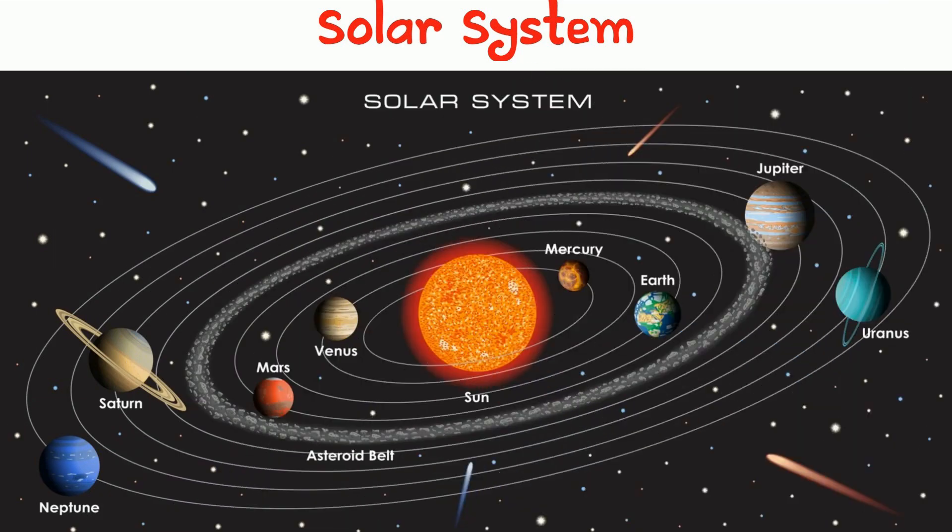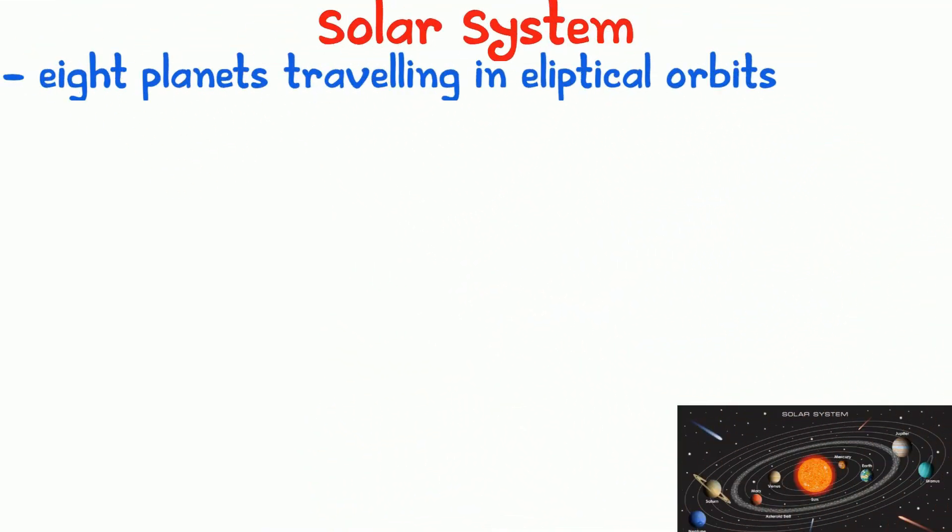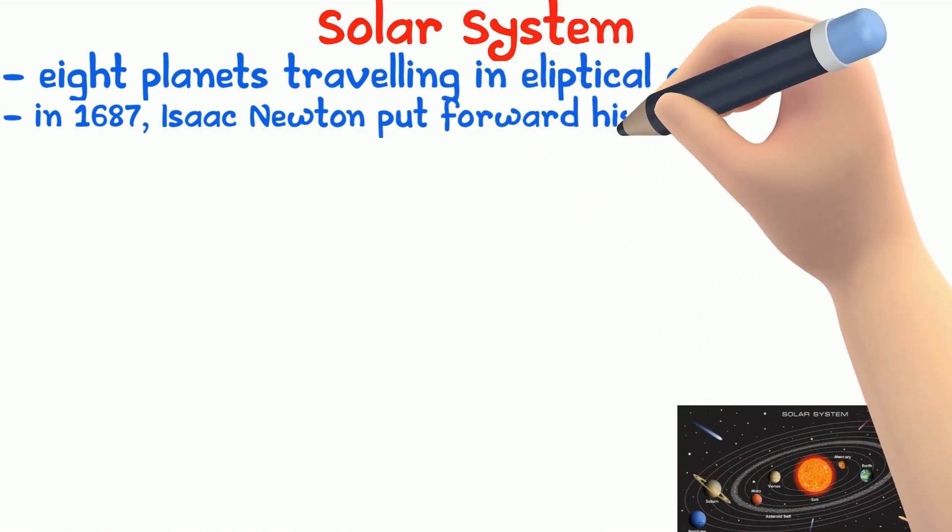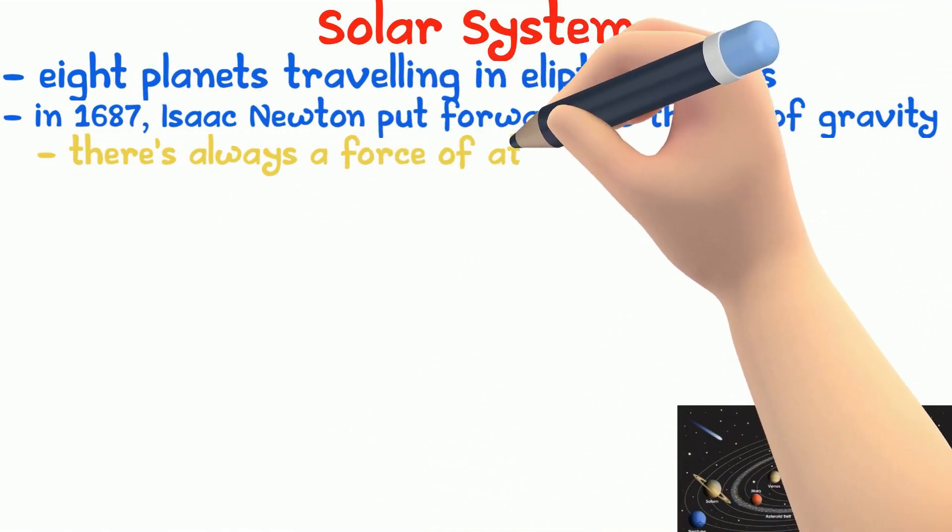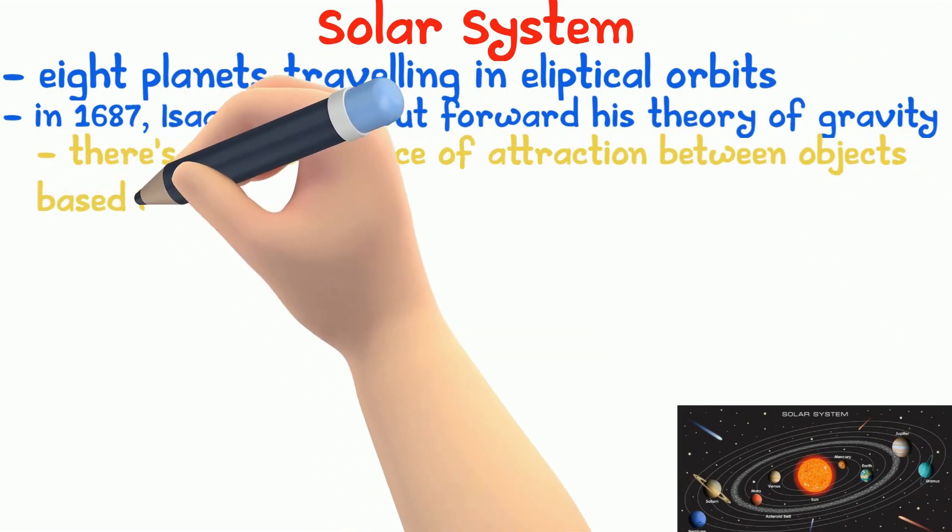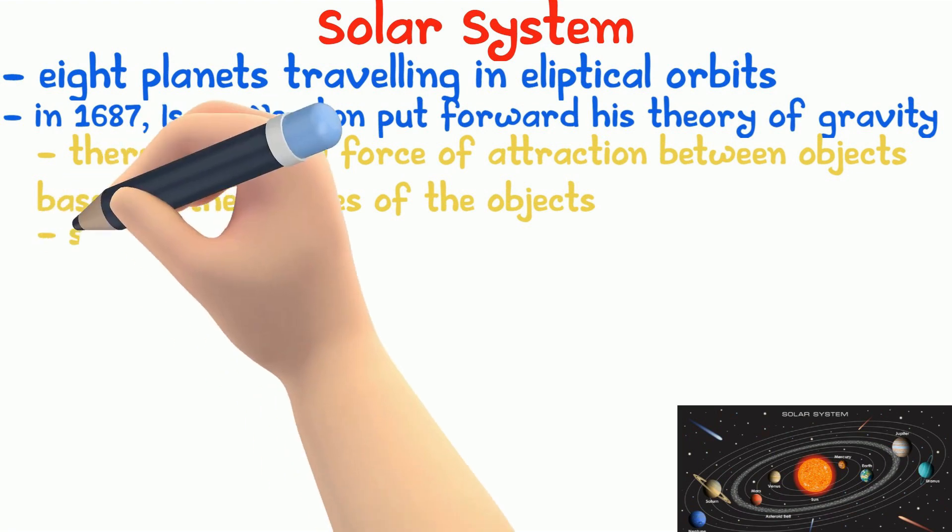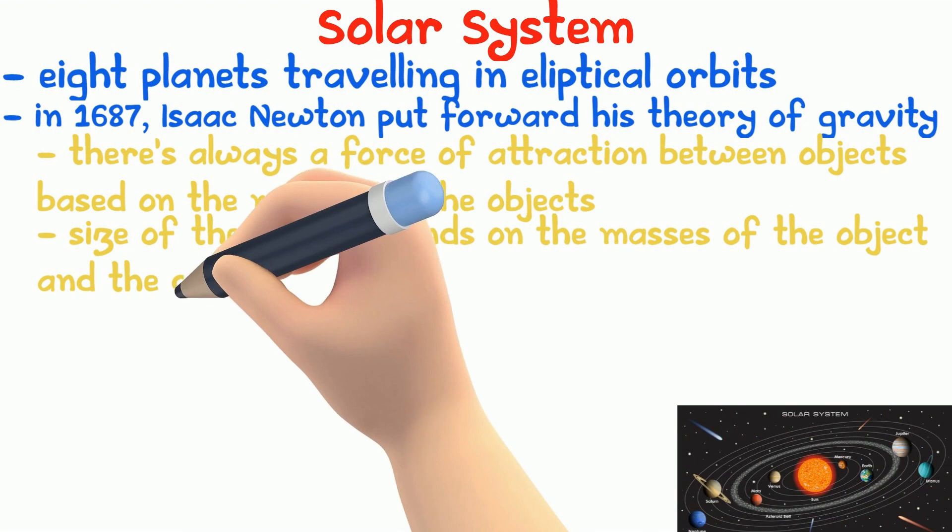This is the solar system. There are 8 planets travelling in elliptical orbits. Earth is one of them. For these planets and comets to travel around the sun, there must be some sort of force being applied because there are no strings or wires. In 1687, Isaac Newton put forward his theory of gravity stating there is always a force of attraction between two objects caused by the masses of the object. He called this the gravitational force and suggested that the size of the gravitational force depends on the masses of the object and the distance between them.